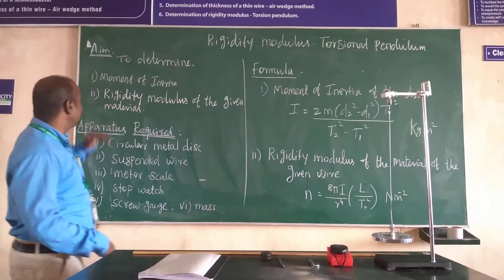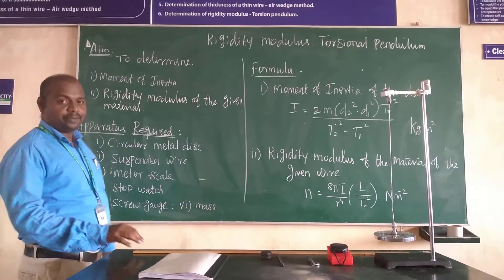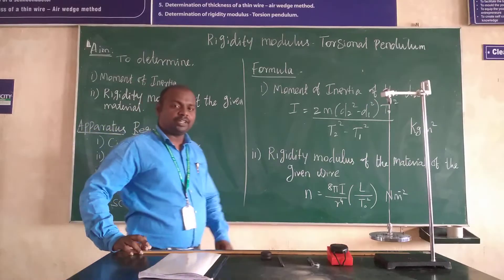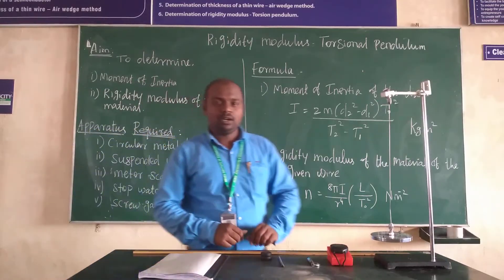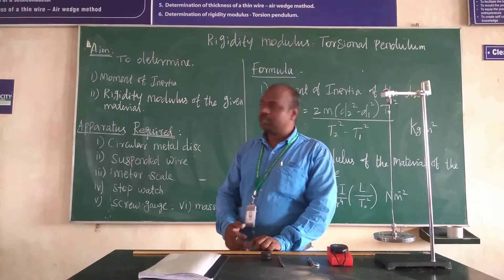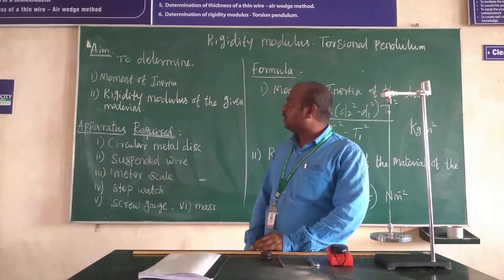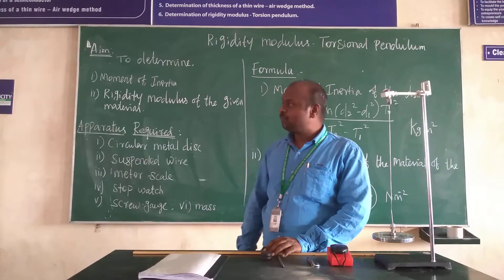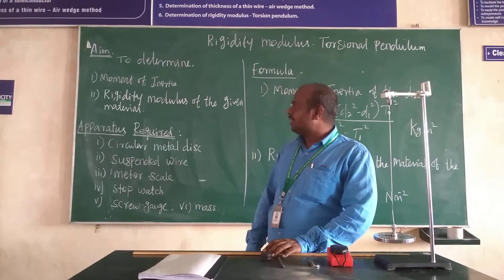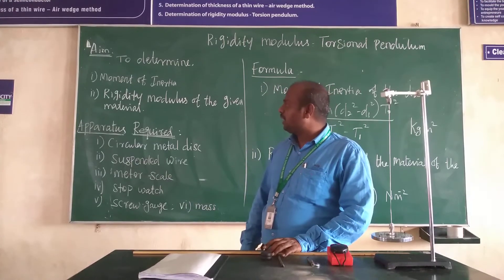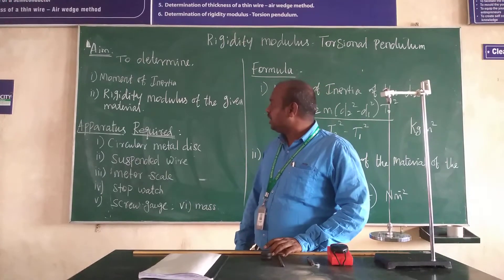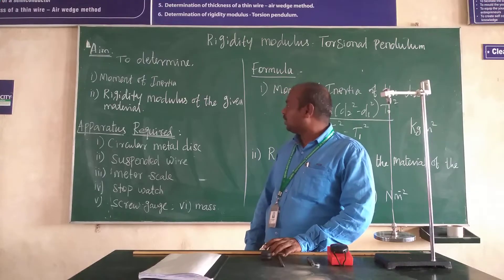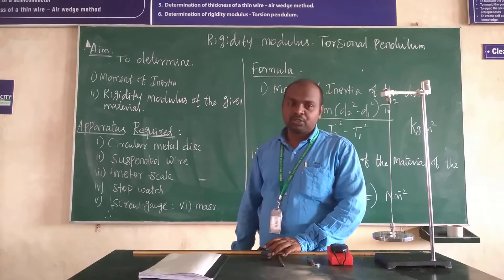First we are going to discuss about the aim — what we are going to do from this experiment. The aim is we have to find the moment of inertia of the given material, and the second aim is we have to find the rigidity modulus of the given material.